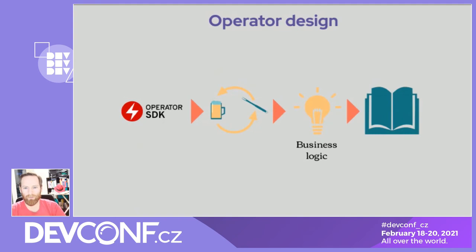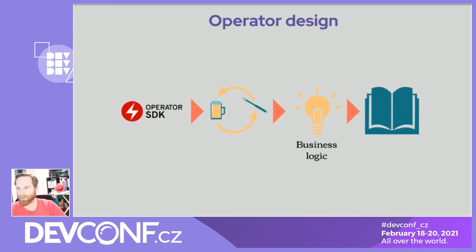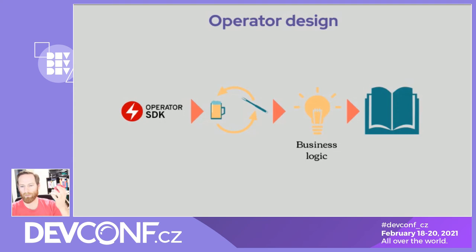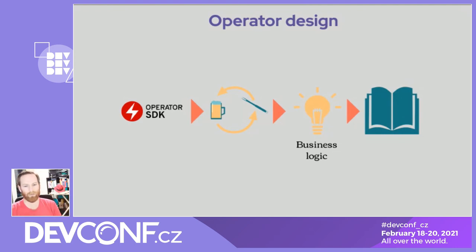The operator design looks quite similar to every other application. What I always say is that the entry point to the reconcile loop — the reconcile function when using the Operator SDK — is kind of the main function of your code, where you put all your business logic. From within that business logic, you reach out to external libraries like the Kubernetes client to create a pod or the AWS library to create RDS databases, or whatever you need from other libraries. This is all very similar to production software.